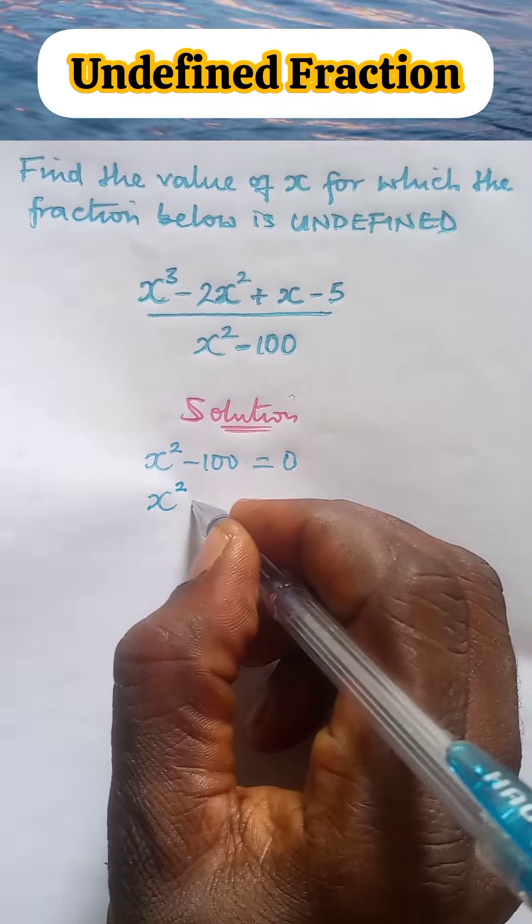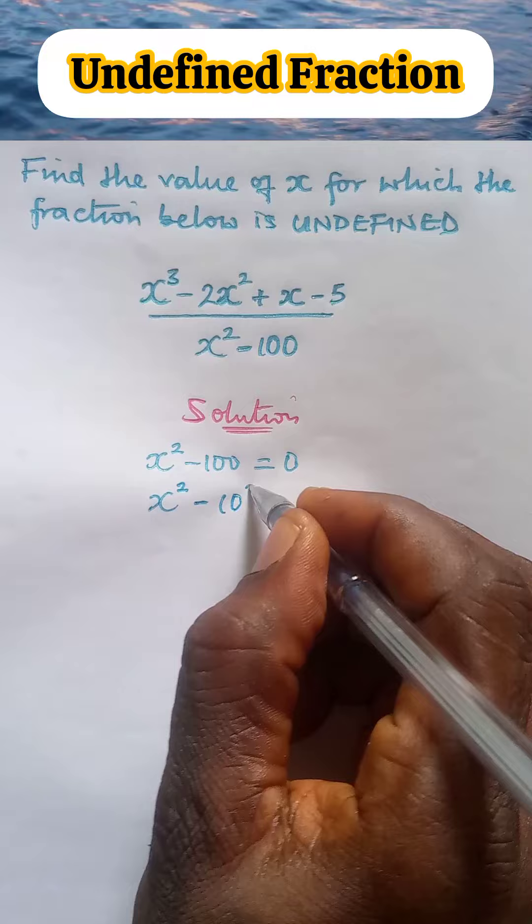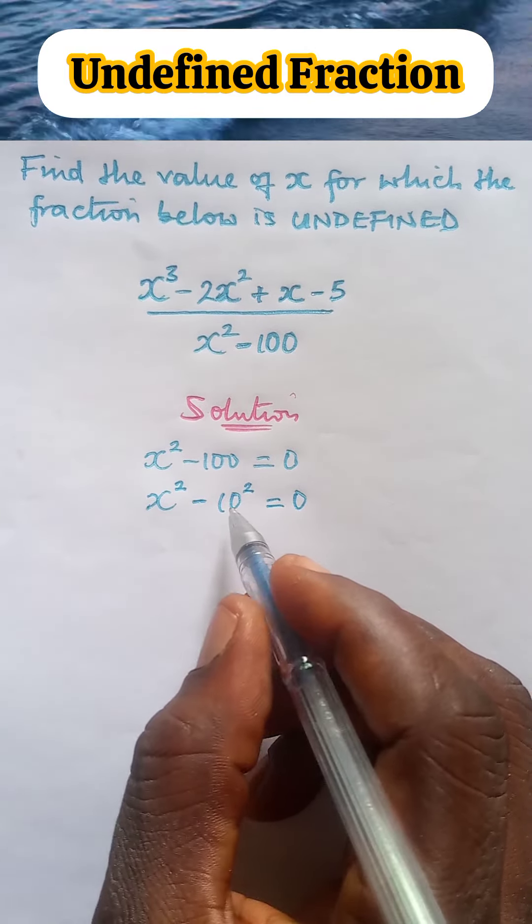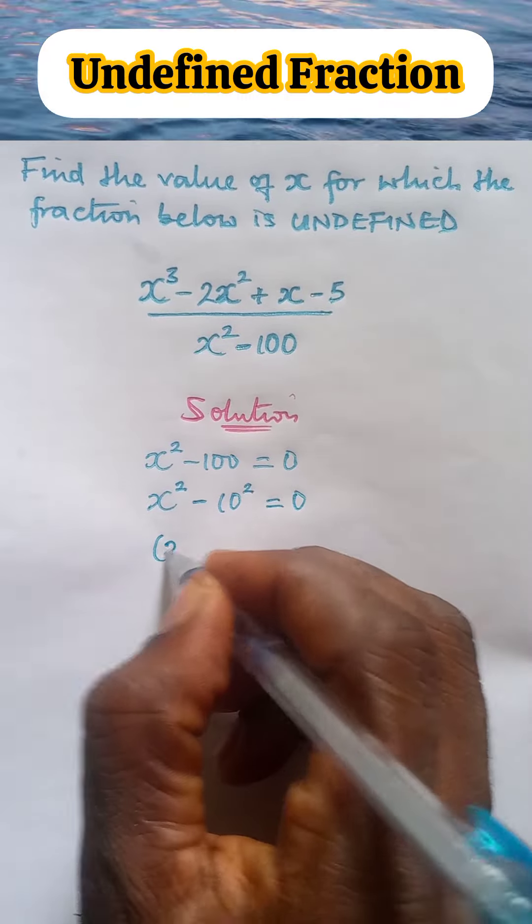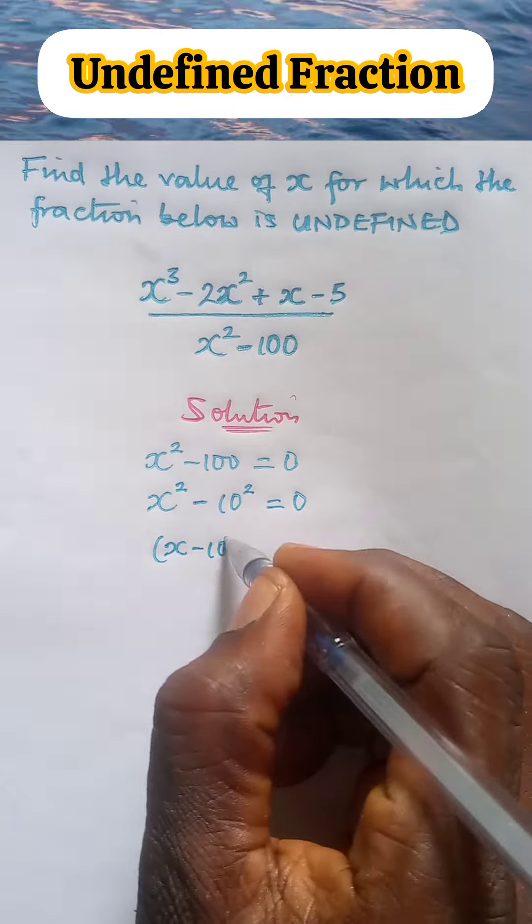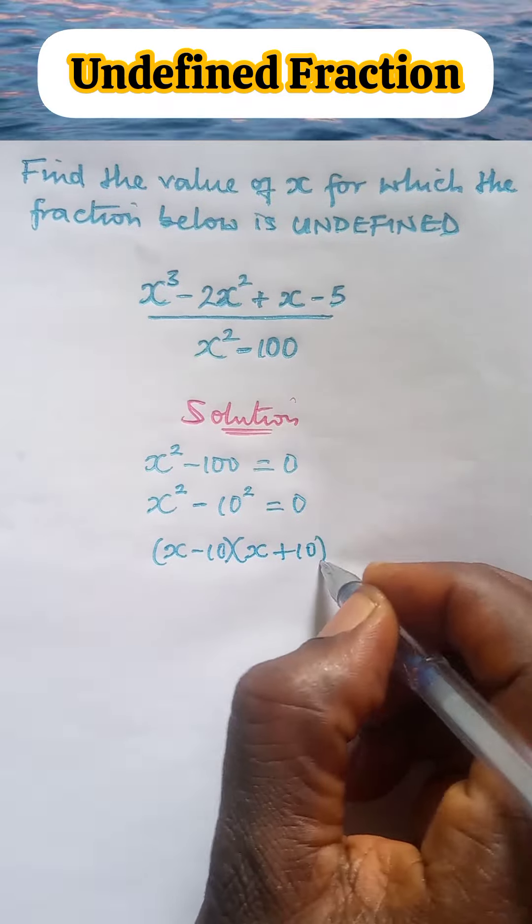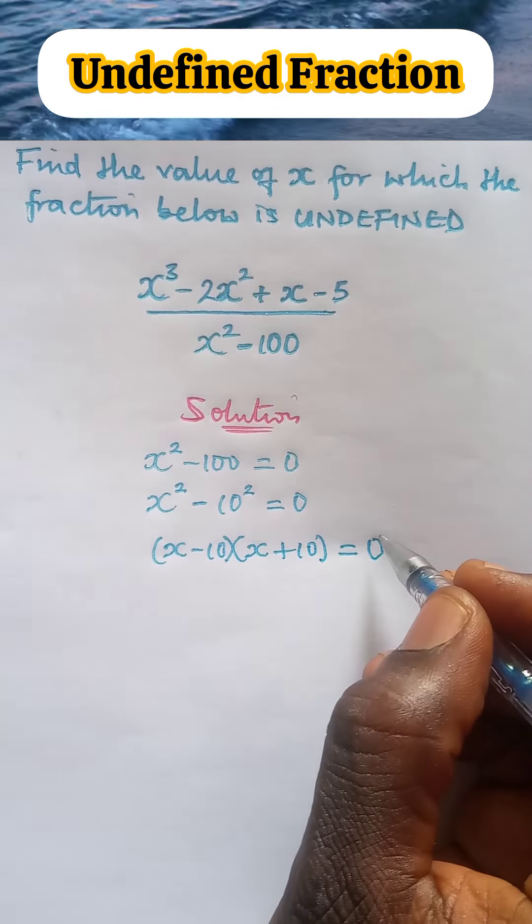We have x squared minus 100 is written as 10 squared equal to 0. Here, we have difference of two squares. So, we will factorize. We have it as x minus 10 multiply x plus 10 equal to 0.